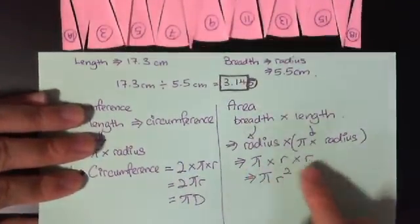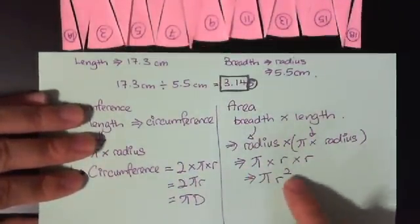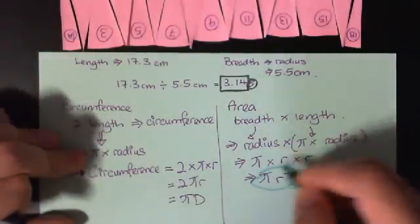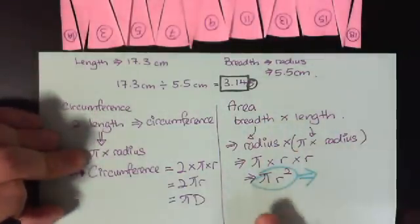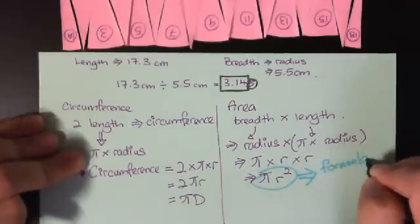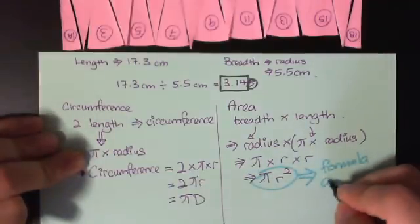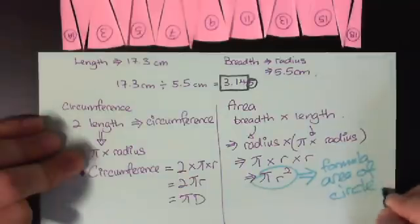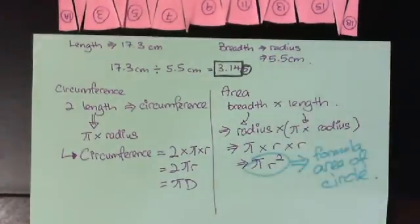Okay, sorry, pi times r times r, and I have πr². So once again, I prove that the formula is correct. Okay, this is the formula that we use for finding area of circle. And tada, we have proof once again that Archimedes is correct.